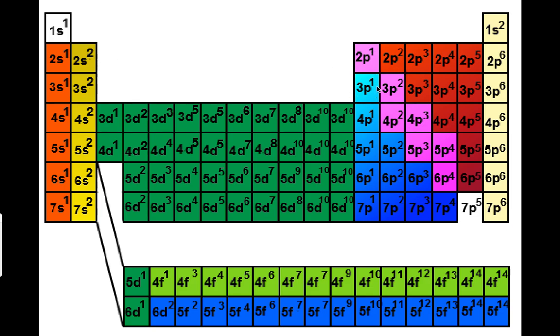If you were going to choose aluminum, you'd have 1s2, 2s2, 2p6, 3s2, 3p1. And so you can familiarize yourself with this chart as well.